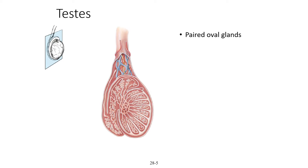The testes are a pair of oval-shaped glands, each filled with two or three seminiferous tubules. The seminiferous tubules are specifically where sperm are actually formed — that is a question on the quiz. Here you can see the septum, which divides the seminiferous tubules, and a lobule, which is a section of seminiferous tubules. The seminiferous tubule itself is where sperm are actually formed, and it will be surrounded by a capsule.